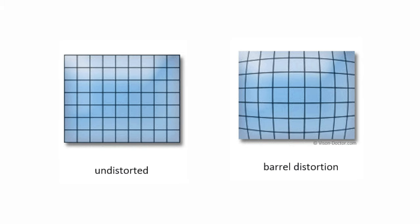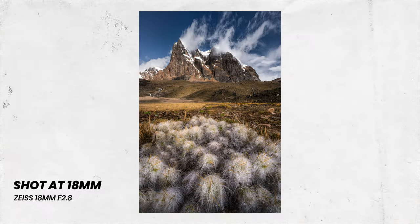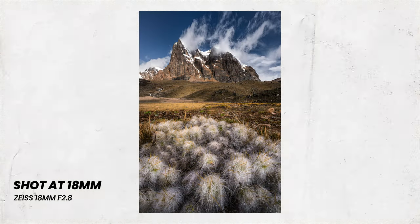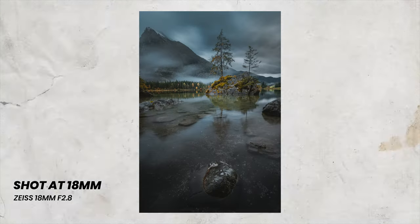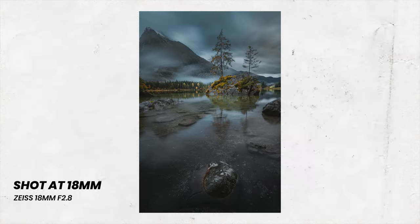Wide-angle lenses also have a certain distortion called barrel distortion, and it's really cool because it allows you to get creative with foregrounds by getting really close to them and really exaggerating that foreground — like in these shots here where I move the camera down low to the foreground element to really emphasize it.